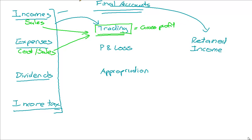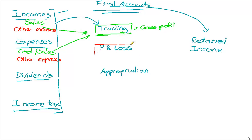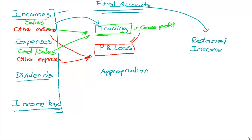Then I will also have some other incomes and other expenses. Let's say some other incomes and other expenses — they are going to be closed off to my profit and loss account. And if you take all the other incomes and the other expenses, as well as the gross profit, the gross profit is also going to be closed off to the profit and loss account.